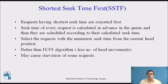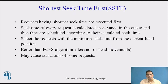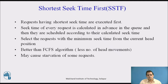In Shortest Seek Time First, we select the request from the request queue which is shortest — meaning not the smallest value, but the one nearest to the current head position. It performs better than FCFS because there are fewer head movements. However, it can also cause starvation of some requests, meaning some requests are waiting for their turn and there is a time delay — those requests are called starvation.